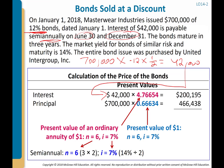We multiply the $700,000 face amount by the present value of an annuity factor for the interest payments, and the present value of a dollar factor for the principal — same approach as the investment chapter. Crucially, we look those factors up at the market rate of interest. With a market rate of 14%, we divide by two to get 7% semi-annual, and look up 6 periods for this 3-year semi-annual bond.